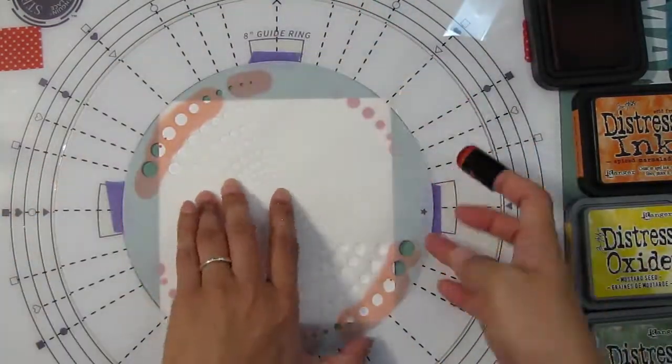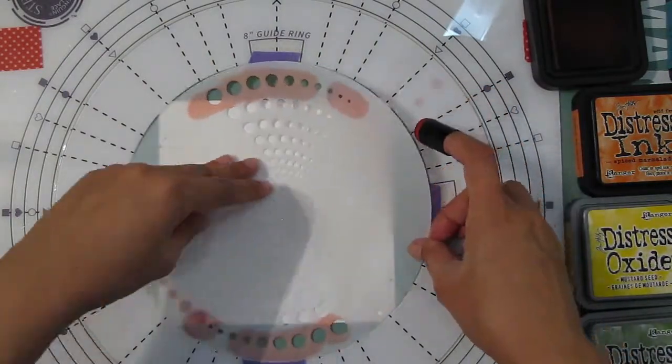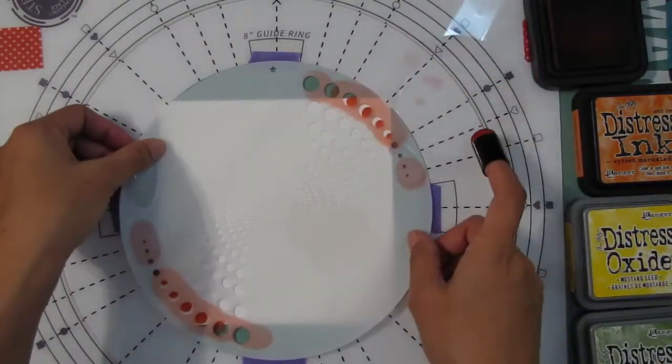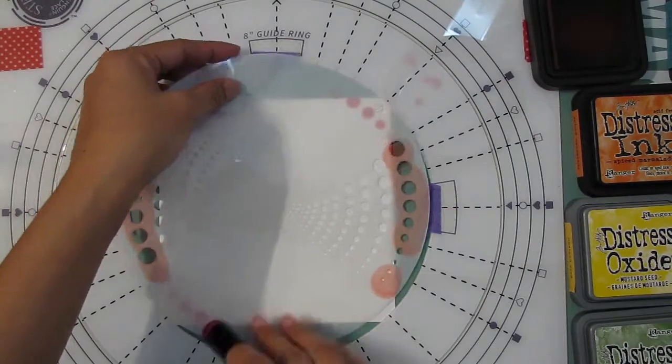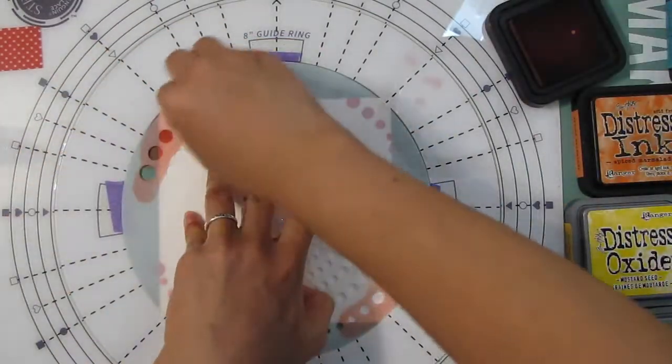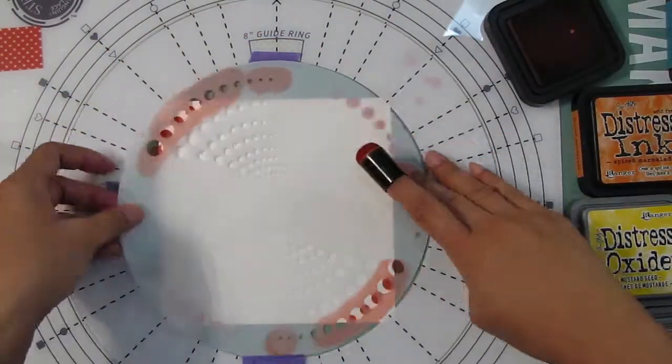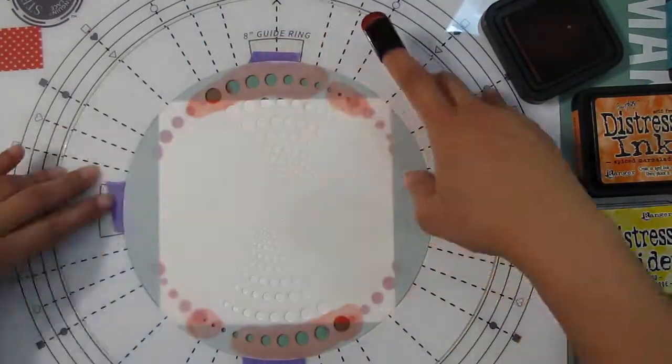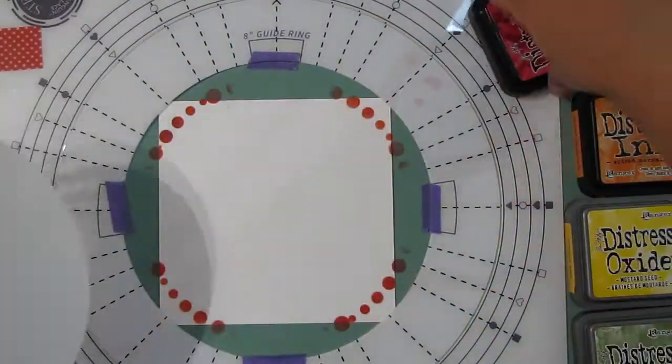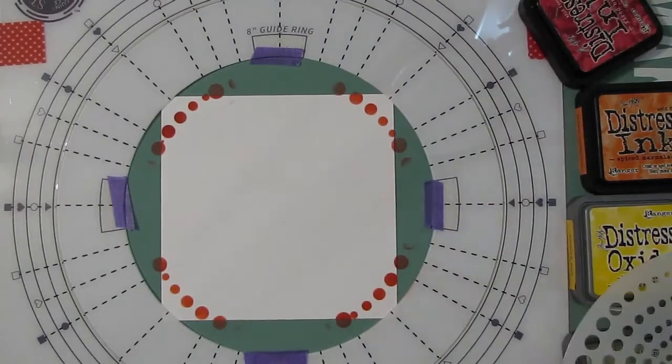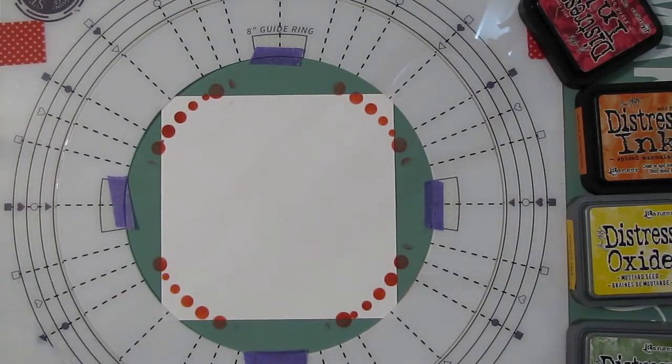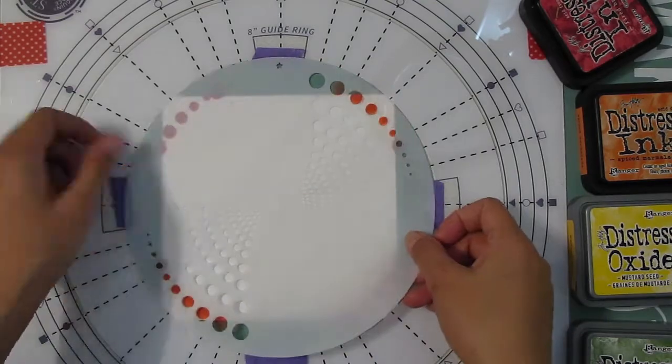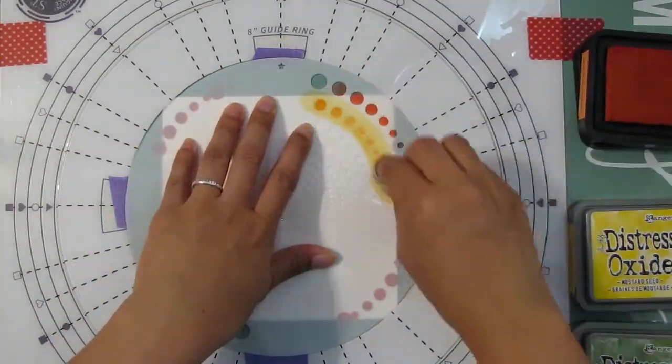I went ahead and started to use the Waterspout stencil. At first I was going to follow along the symbols on the outer ring, and then I just decided to wing it. I had an idea in my head to do some kind of rainbow circle ring, so that's what I went for.